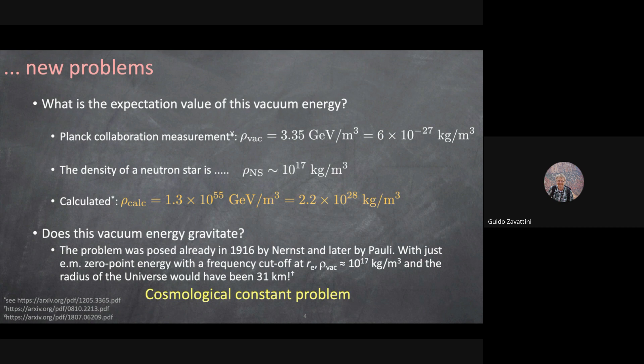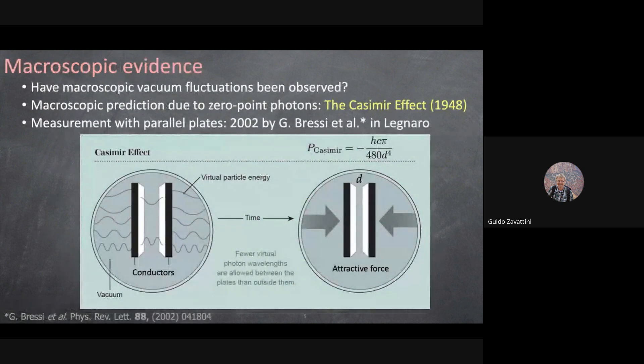Already at the beginning of the 1900s, Nernst considered just electromagnetic energy — photons — and summed their zero-point energies. The harmonic oscillator in its ground state has energy ½ℏω, and summing all these for photons with a cutoff at the classical electron radius gives a huge energy: 10¹⁷ GeV. As Pauli said, the universe would have been just 31 kilometers in diameter. This cosmological constant problem remains unsolved today.